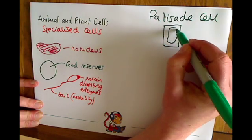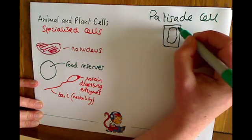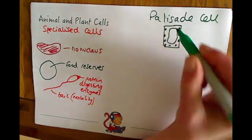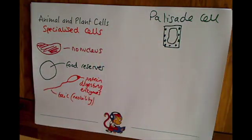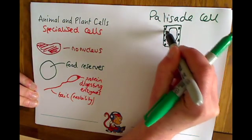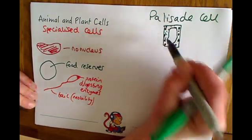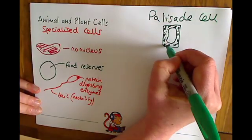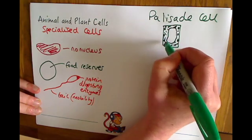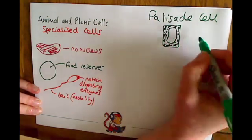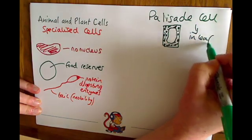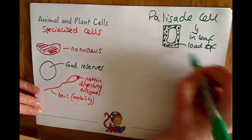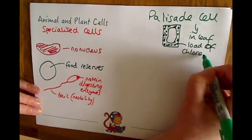It'll still look very similar to what we've drawn. It'll have all the other components. But it'll have loads of these chloroplasts as well. Still going to have the nucleus, and the ribosomes, and the mitochondria, and all of that in there. But it's just packed full of chloroplasts. Because its main function is to perform photosynthesis. So because it's in the leaf, in the leaf it is full of chloroplasts. Loads of chloroplasts to allow it to do lots of photosynthesis.